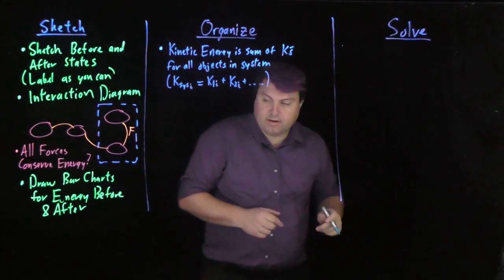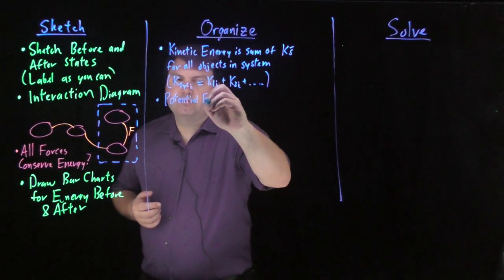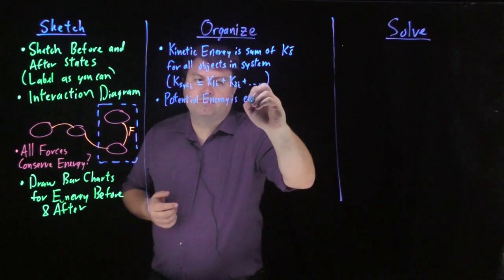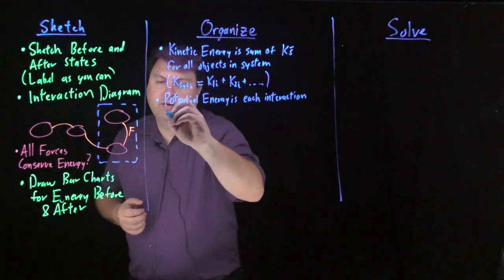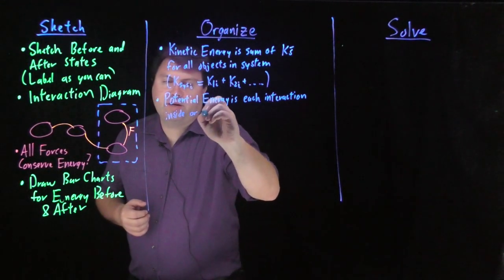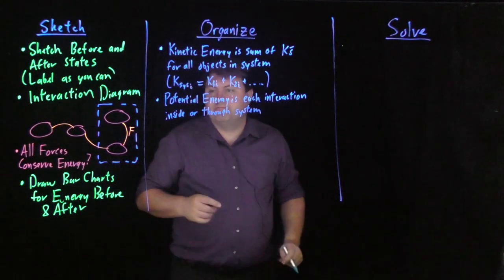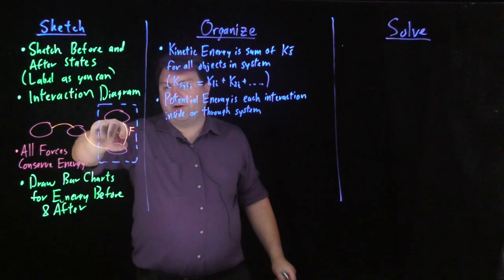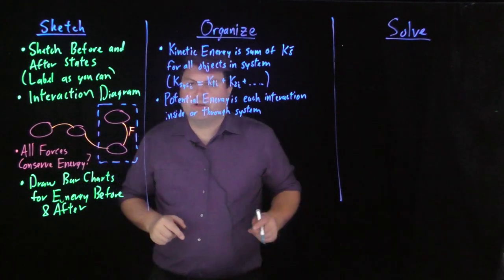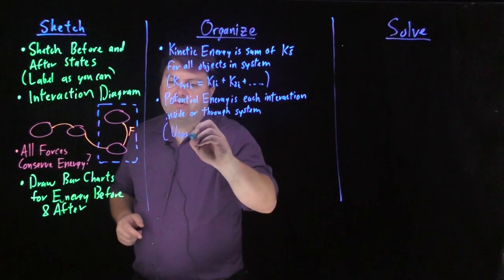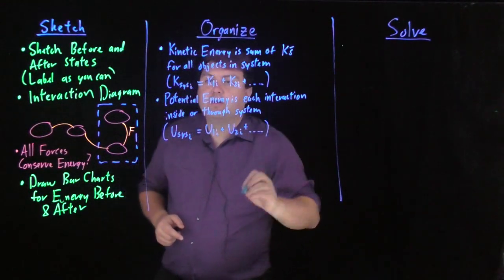For our potential energy, it's each interaction inside or through the system. For this orange line, we're only counting the one interaction—not this force plus this force, but this one interaction once. So the potential energy for our system initial would be u1i, u2i, and if we had more, we would add those.